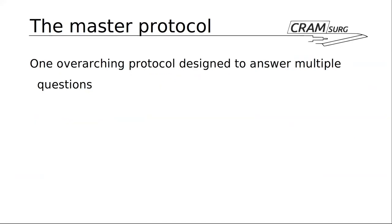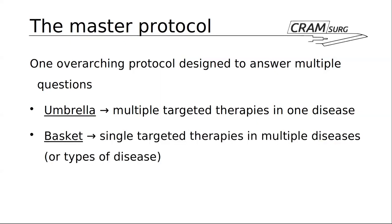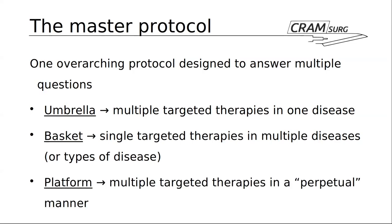A master protocol is an overarching protocol designed to answer multiple questions. There are different types. One is the umbrella protocol, which allows you to look at multiple targeted therapies in one disease. Basket protocols do the opposite — they look at one targeted therapy in a number of diseases or disease types. And finally, platform protocols look at multiple targeted therapies in what is described as a perpetual manner. Hopefully with examples as we go along, we'll understand this better.